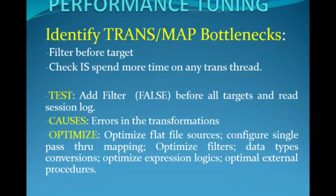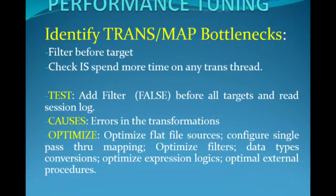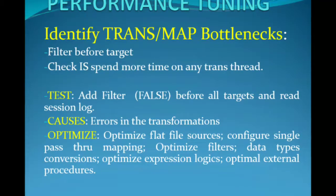When the Integration Service spends more time on the transformation thread than the reader, writer, or other transformation threads, that transformation has a bottleneck. Optimization options include configuring flat file sources with single-pass reading, optimizing simple pass-through mappings, optimizing filters, data type conversions, expression logic, expressions, and external procedures used in the mapping.